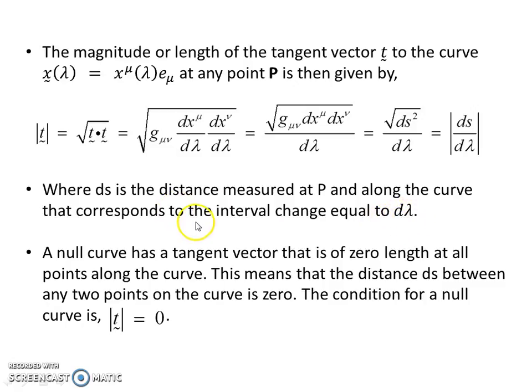So a null curve has a tangent vector that is of zero length at all points along the curve. This means that the distance ds between any two points on the curve is zero. The condition for a null curve is |t| = 0.